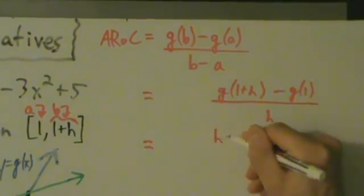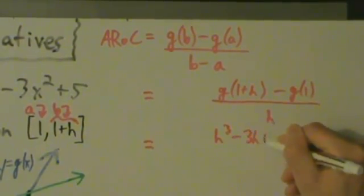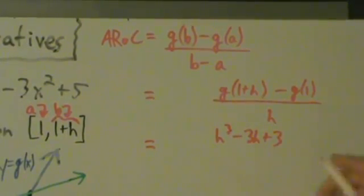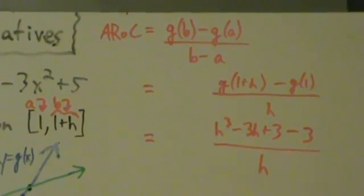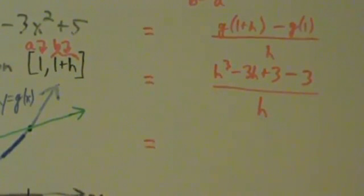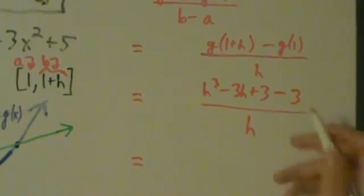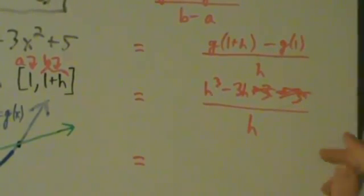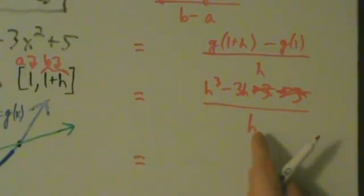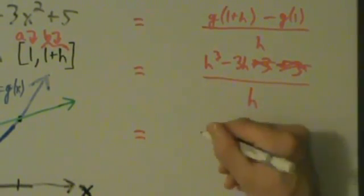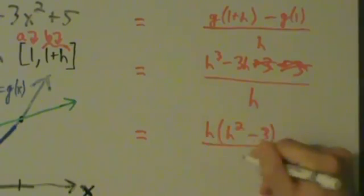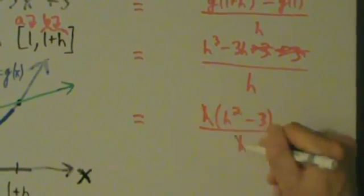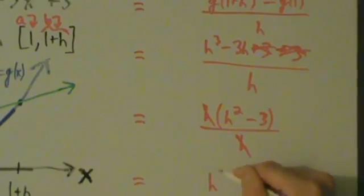So plugging in: g of 1 plus h is h cubed minus 3h plus 3, and we subtract g of 1, which is 3, all divided by h. Plus 3 minus 3 cancels. Now we have h cubed minus 3h all divided by h. There's a common factor of h everywhere, so we factor: h times h squared minus 3, divided by h. The h's cancel, and we're left with h squared minus 3.